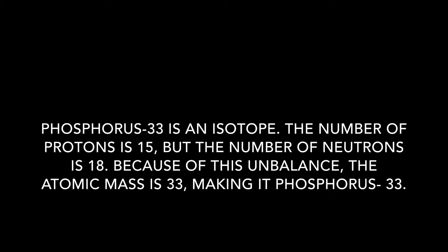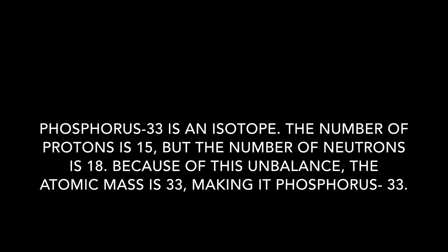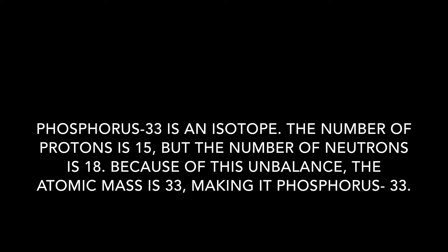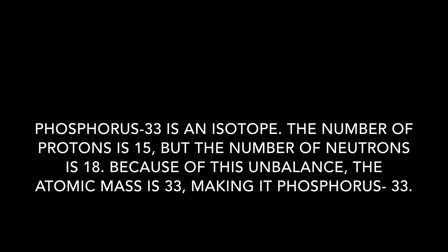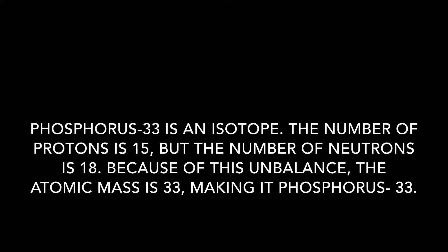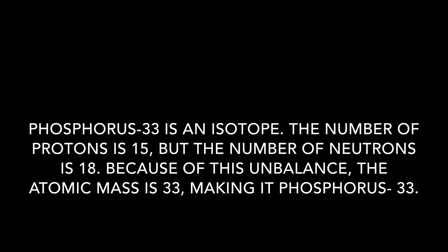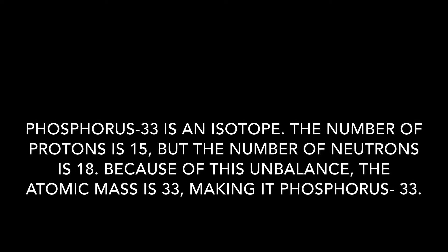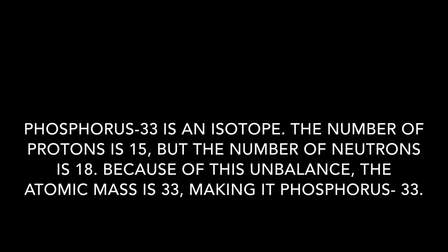Phosphorus 33 is an isotope. The number of protons is 15, but the number of neutrons is 18. Because of this unbalance, the atomic mass is 33, making it Phosphorus 33.